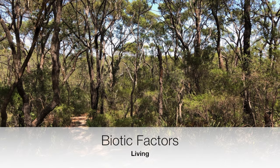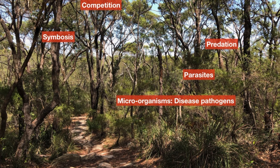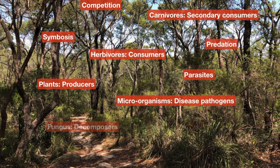The biotic or living factors that affect an ecosystem are many and varied, with living things working both with and against each other in order to survive. Interactions between living things are all at play even if we can't always see it. The particular way in which an organism interacts with other living things will depend on whether they are a producer, a first-order consumer, a second-order consumer or a decomposer.